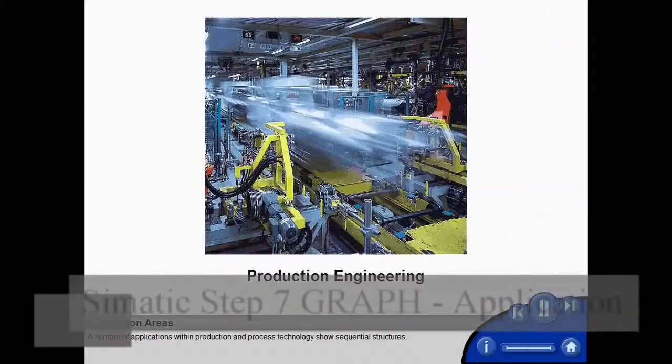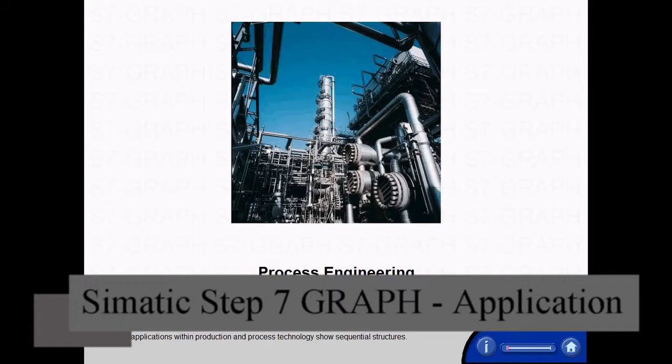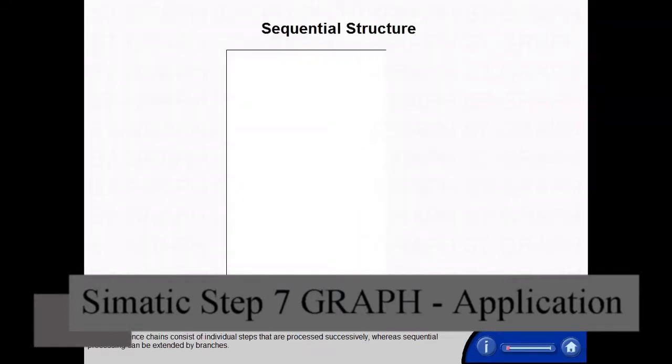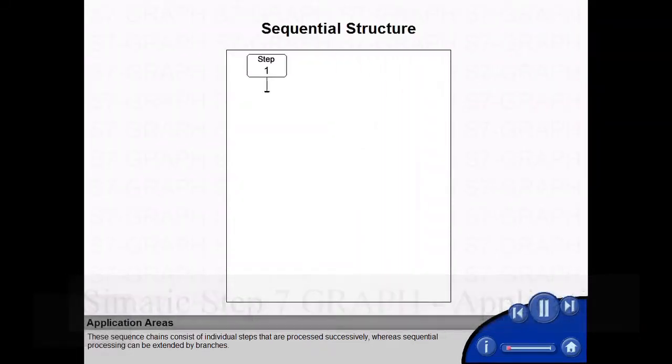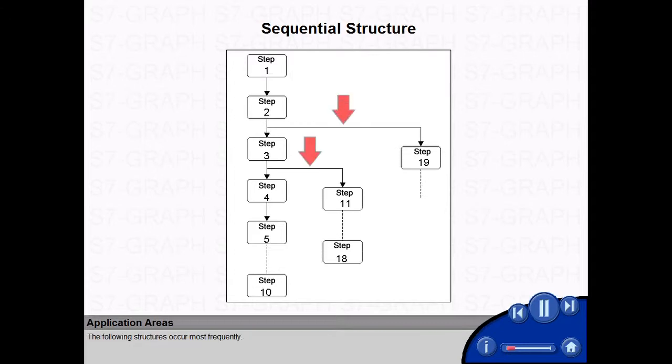A number of applications within production and process technology show sequential structures. These sequence chains consist of individual steps that are processed successively, whereas sequential processing can be extended by branches. The following structures occur most frequently.